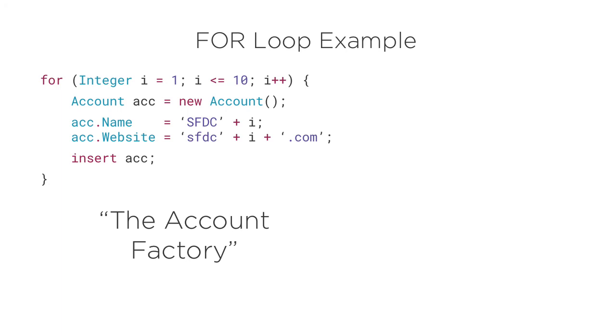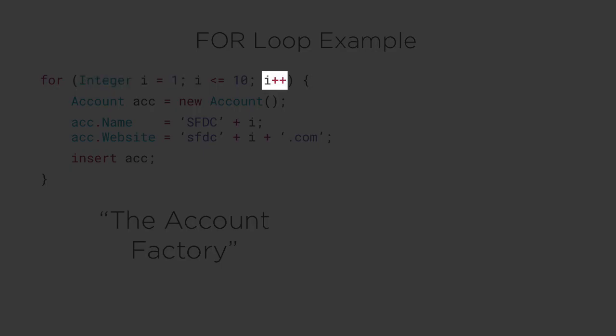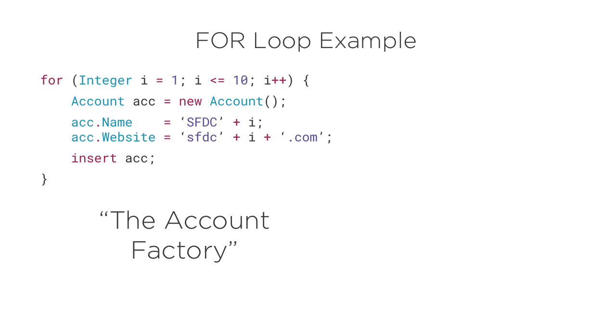Here we're making a for loop that'll run exactly 10 times. I know this because i starts at 1, it increments by 1 each loop iteration, and it'll stop looping after i equals 10. Specifically, this code's purpose is to create exactly 10 accounts.